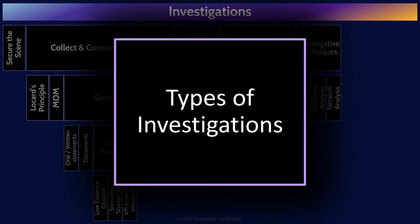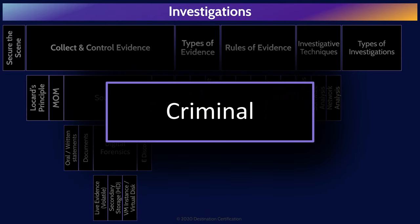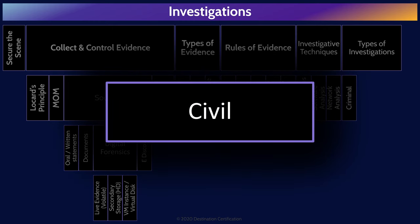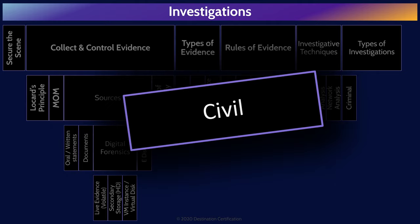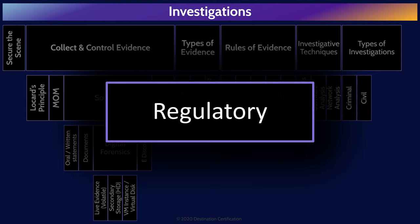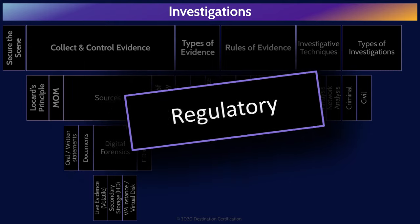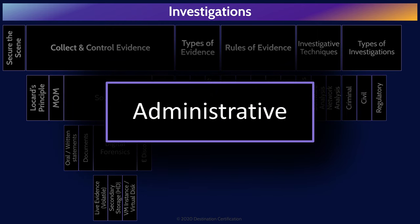There are a few different types of investigations you need to know about. Criminal investigations deal with crimes and the legal punishment of criminal offenses, and are driven primarily by law enforcement with support from the organization. Civil investigations deal with disputes between individuals, organizations, or between the two, in which compensation is awarded to the victim, and can be driven by law enforcement or the organization. Regulatory investigations deal with violations of regulated activities, such as breaches of personally identifiable information, and will be driven by the regulator. Administrative investigations deal with an organization investigating its own internal incident, and based on findings, an internal investigation may become a criminal, civil, or regulatory investigation.